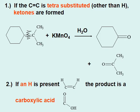When permanganate solution is neutral or acidic, a series of different products can be formed depending on what is bonded to the carbon-carbon double bond. If there is no hydrogen bonded to the carbon containing the double bond — and there are two substituent groups — then it not only breaks the double bond, it introduces oxygen in that place, forming a ketone. In this case, since both carbons have no hydrogen, you get two ketones.